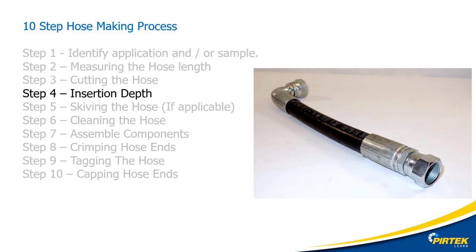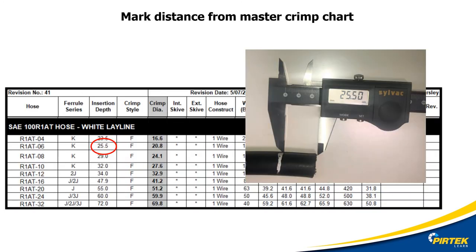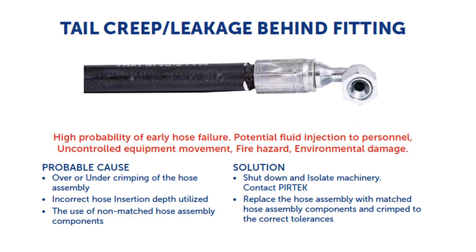Step four: insertion depth. Insertion depth can be marked with an insertion depth gauge. The insertion depth can also be referenced from the master crib chart. Incorrect insertion depth can also cause tail creep and leakage behind the fitting.